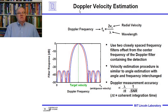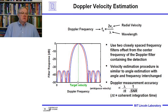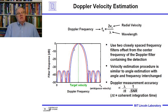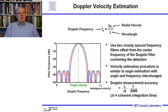Moving on to Doppler velocity estimation: the Doppler frequency is given by twice the radial velocity divided by the wavelength. We use two closely spaced Doppler filters offset from the center frequency of the filter containing the detection. Knowing the shape of the Doppler frequency response and the amplitude in each of the two filters, we can estimate the exact Doppler frequency. The Doppler frequency measurement accuracy is proportional to the wavelength divided by the coherent integration time, and inversely proportional to the square root of the signal-to-noise ratio.